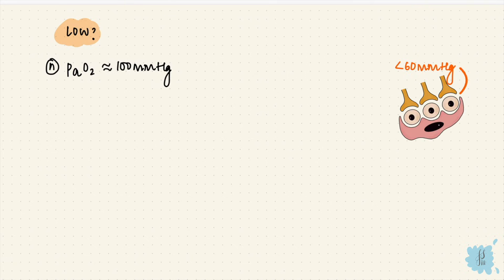But how low is low? Normal arterial oxygen is around 100 millimeters of mercury. It's only when it goes below 60 that the glomus cells get stimulated. What about 60 to 100? Why doesn't that work? There are two reasons.